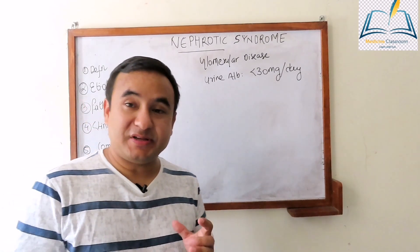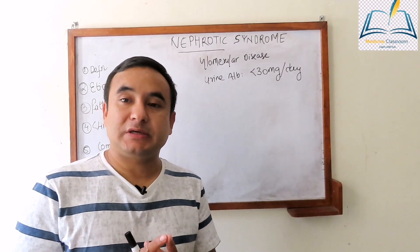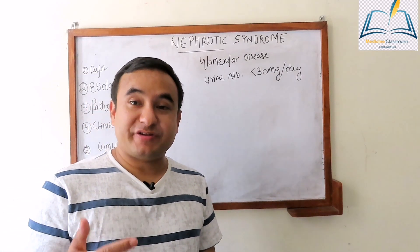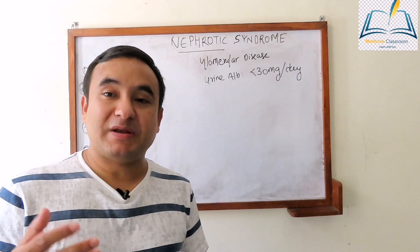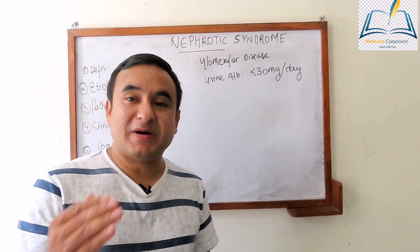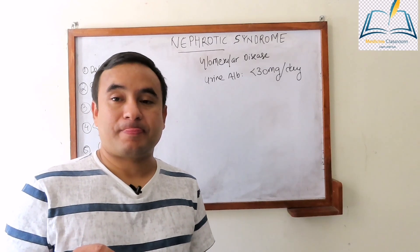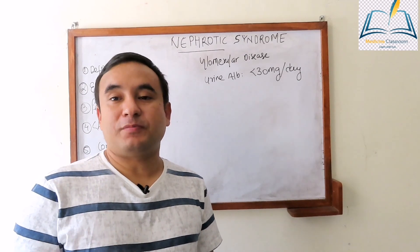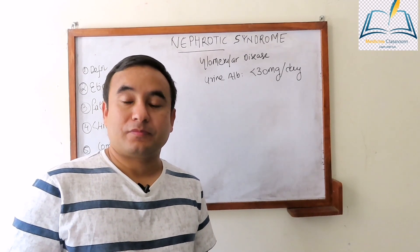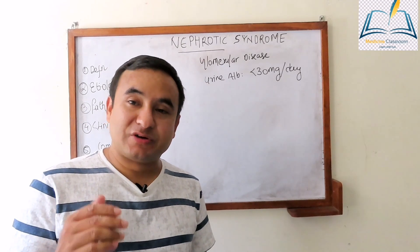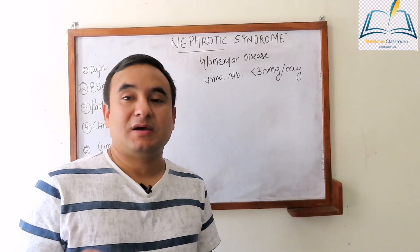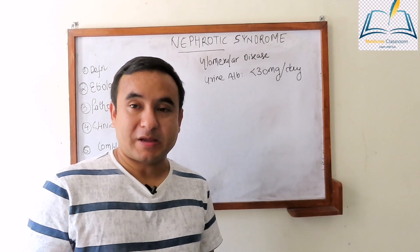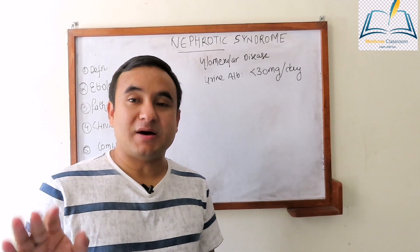Why is this so? We discussed this when discussing the anatomy of glomerular disease. Because of the presence of an electronegative charge in the basement membrane, it repulses the negatively charged albumin, even though the size of albumin is smaller than the diameter of the slit diaphragm. Some albumin can pass through the glomerulus into the tubules, but most albumin gets reabsorbed through the tubules.